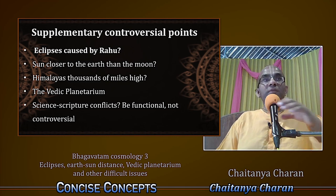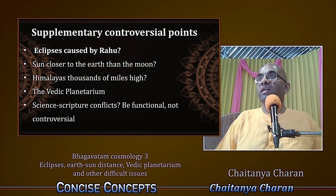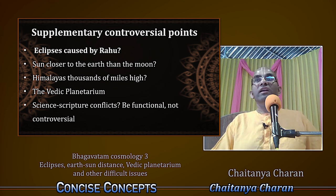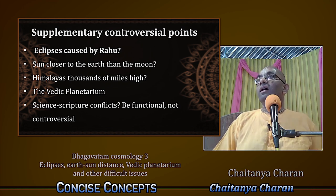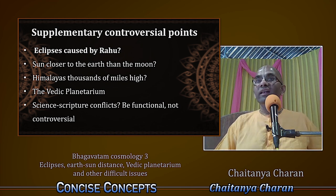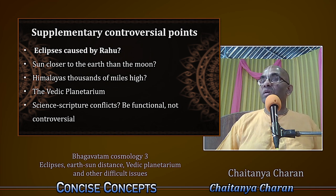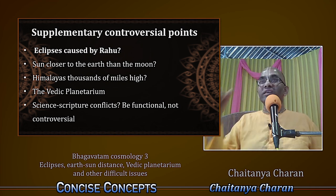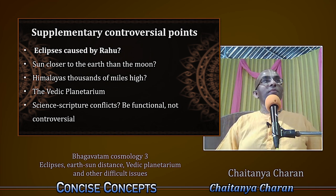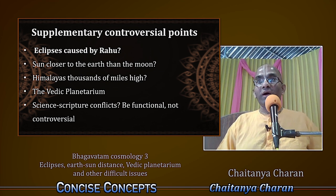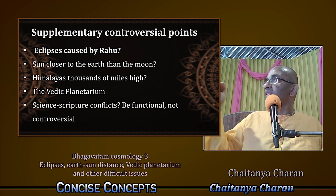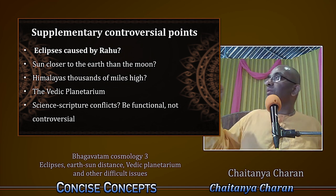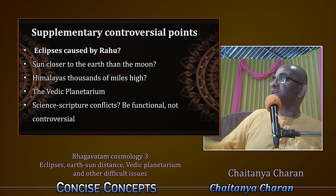One of the things people ask about is the modern understanding versus the Vedic understanding of eclipses. Are eclipses caused by Rahu? It seems like a childhood fairy tale that some monster comes and eats the Sun or the Moon. People make fun of this, but actually if you look at the Vedic explanation, it's much more sophisticated. So let's try to understand this.